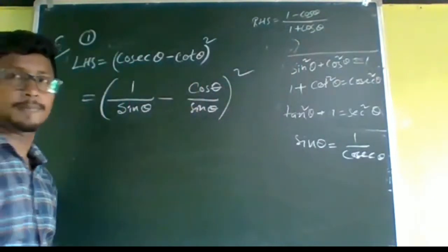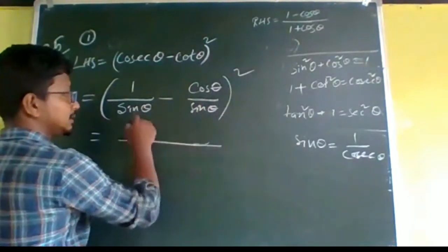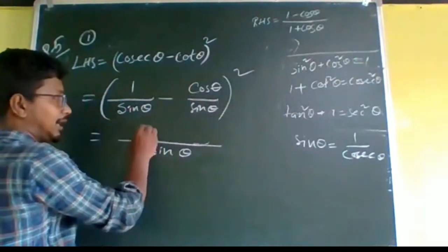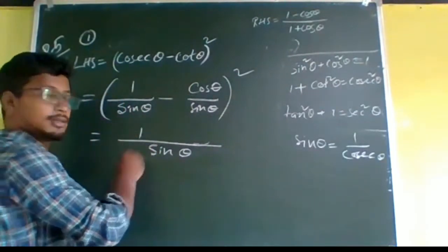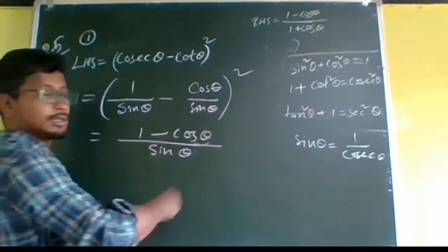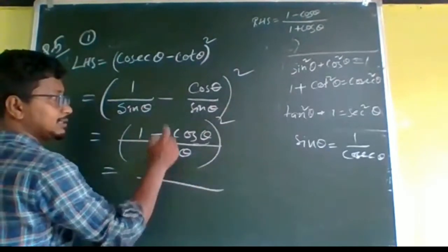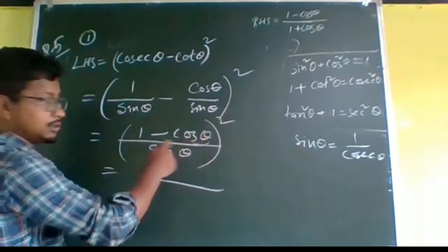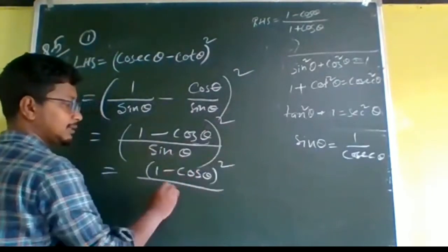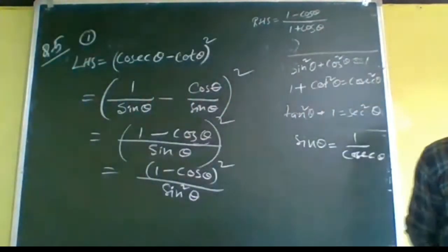In the next step, we take the LCM, which is sinθ. Since the denominator is already sinθ for both terms, the numerator comes as it is: (1 - cosθ), all over sinθ, whole squared. So we get (1 - cosθ)² / sin²θ. Is it clear till here?